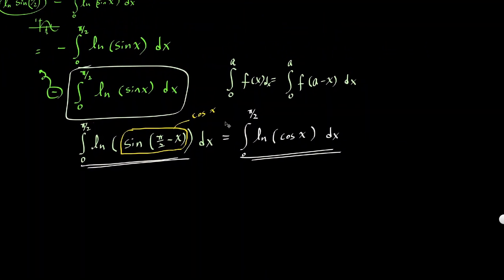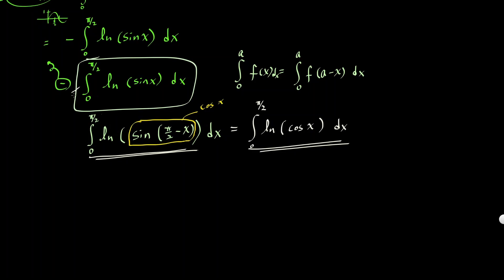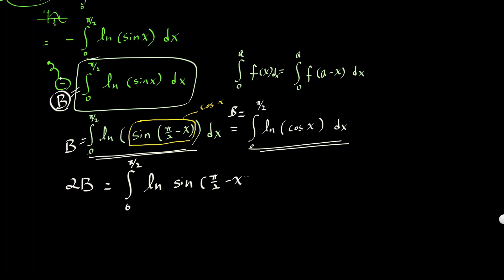What this tells us is that the integral of ln(sin x) and the integral of ln(cos x) from 0 to pi over 2 are equal. Let's call our original problem b. Since these two are equal, if we add them together, 2b equals the integral from 0 to pi over 2 of natural log of sine x plus natural log of cosine x, all times dx.